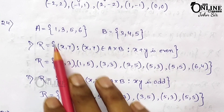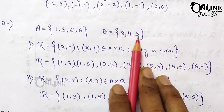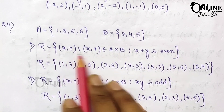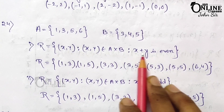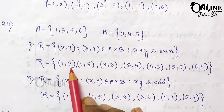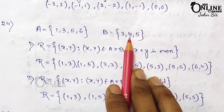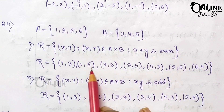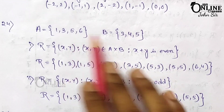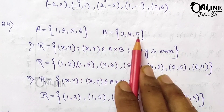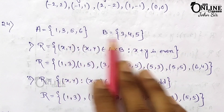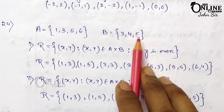Sum number 24. If A = {1,3,5,6} and B = {3,4,5}, write relation R as a set of ordered pairs where x + y is even. Checking pairs: (1,3)=4 even ✓, (1,4)=5 odd ✗, (1,5)=6 even ✓, (3,3)=6 even ✓, (3,4)=7 odd ✗, (3,5)=8 even ✓, (5,3)=8 even ✓, (5,5)=10 even ✓, (6,4)=10 even ✓. So R = {(1,3),(1,5),(3,3),(3,5),(5,3),(5,5),(6,4)}.